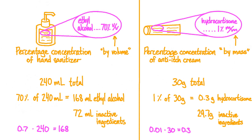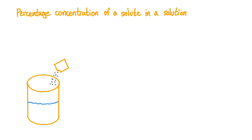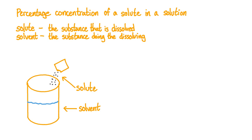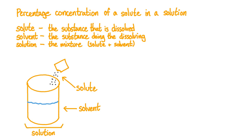We will learn more about calculations surrounding percentage concentration in a moment, but first let's define a couple key terms. Very generally, we talk about the percentage concentration of a solute in a solution. Let's consider sugar dissolved in water as we define these terms. The solute is the substance that is dissolved — in this case, the sugar. The solute is often a solid being added to a liquid, but it could also be a liquid or a gas. The solvent is the substance that does the dissolving — in this case, water. The solution is the mixture of the solute dissolved in the solvent, forming a sugar water solution.